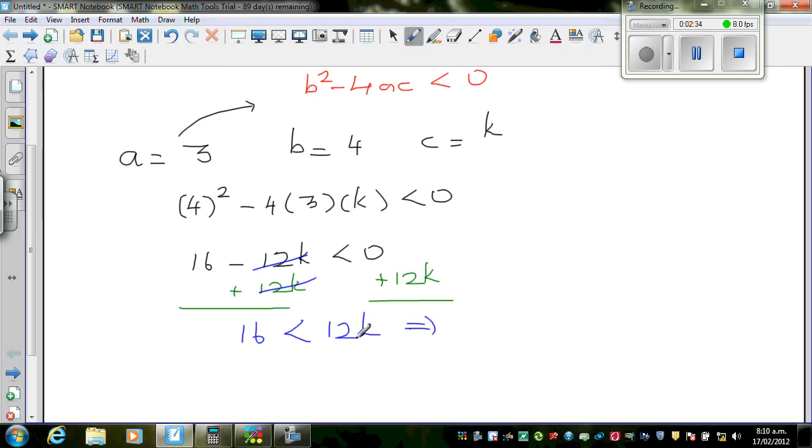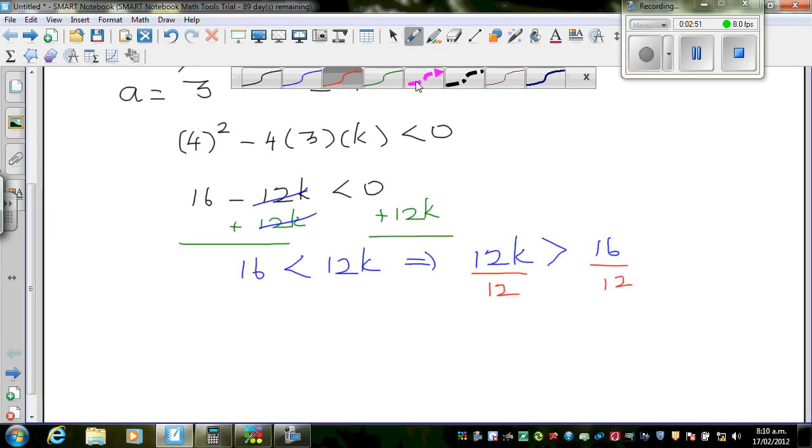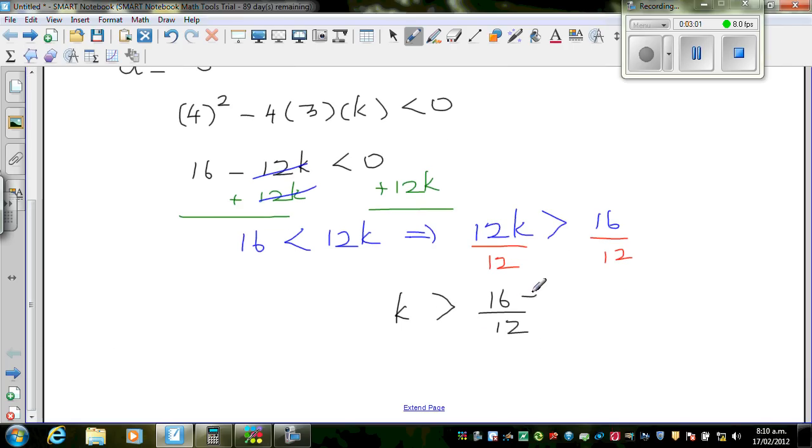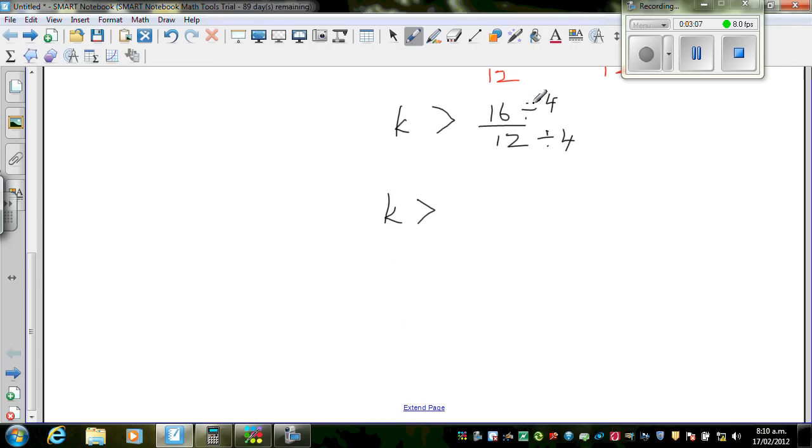The same thing, if you read from here this way around, you can say 12k is greater than 16. So I want to cancel this 12, so I'm going to divide both sides by 12. The inequality doesn't change because you're dividing by a positive number. So k is greater than 16/12. You can divide both numerator and denominator by 4, so k should be greater than 4/3, or k should be greater than 1 and 1/3. If k is greater than 1 and 1/3, you have no real roots.